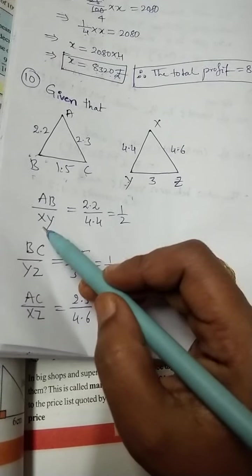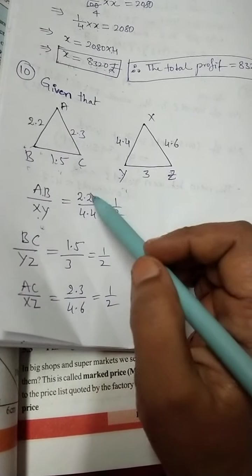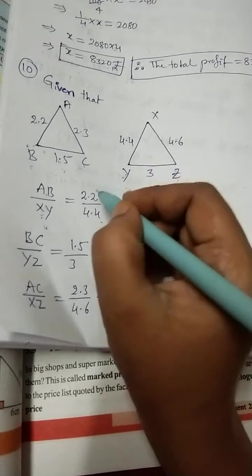Now we should write AB by XY ratio. So AB is 2.2, XY is 4.4. Now directly, 22 ones are 22, twos are 44. 1 by 2.